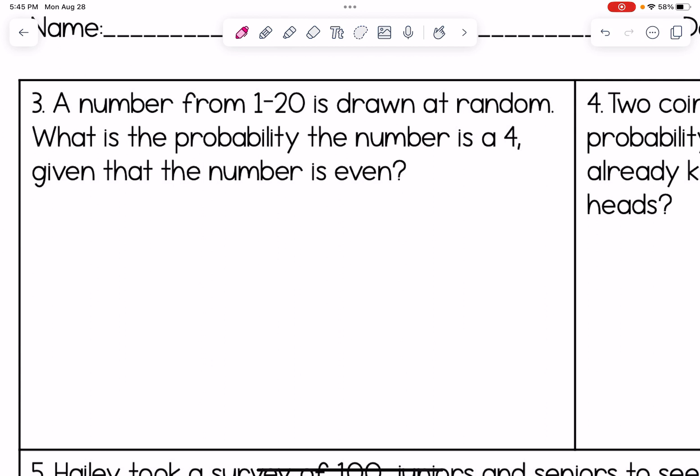Number three, a number from one to 20 is drawn at random. What's the probability the number is a four, given that the number is even? When we have the numbers one through 20, that's a total of 20 numbers. But if we know that it's even, that sample space is being reduced, and only half of those numbers are going to work. So there are 10 numbers really in our sample space. How many of those 10 numbers are four? Just one of them. So our probability that the number is even would be 1/10.